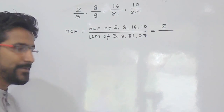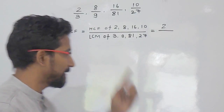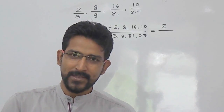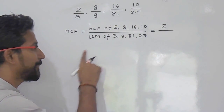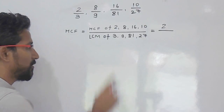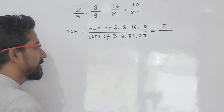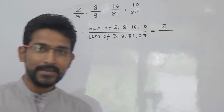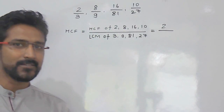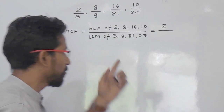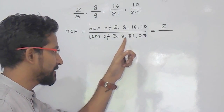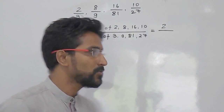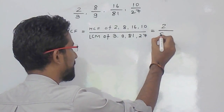Now we find the LCM of the denominators — 3, 9, 81, and 27. Using the trick, we look at the greatest number, which is 81, and check whether the remaining numbers are divisors of 81. 3 is a divisor of 81, 9 is also a divisor of 81, and 27 is also a divisor of 81. So the LCM of the denominators is 81.